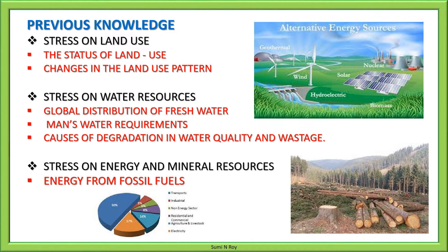Let us discuss what we have done in our previous class. We have learned that growth in human population has led to increase in consumption of various natural resources. The rate of consumption has increased to such an extent that resources like land, water, and minerals are under heavy stress. We discussed stress on land use, stress on water resources, man's water requirement, causes of degradation in water quality, and stress on energy and mineral resources, including alternate sources of energy and energy from fossil fuels.